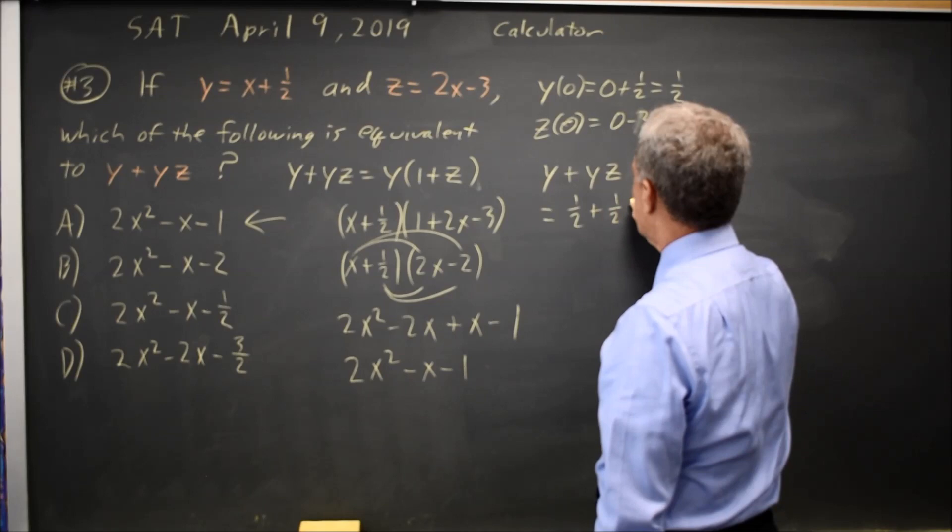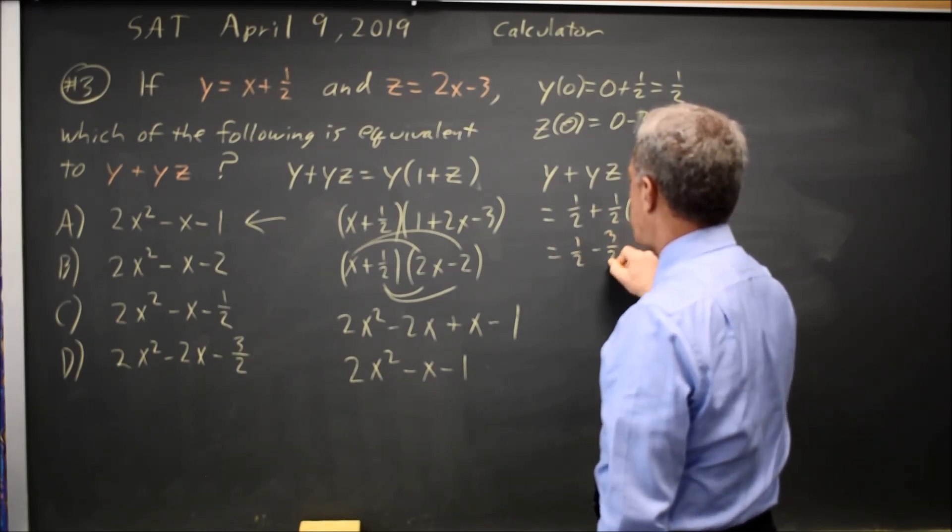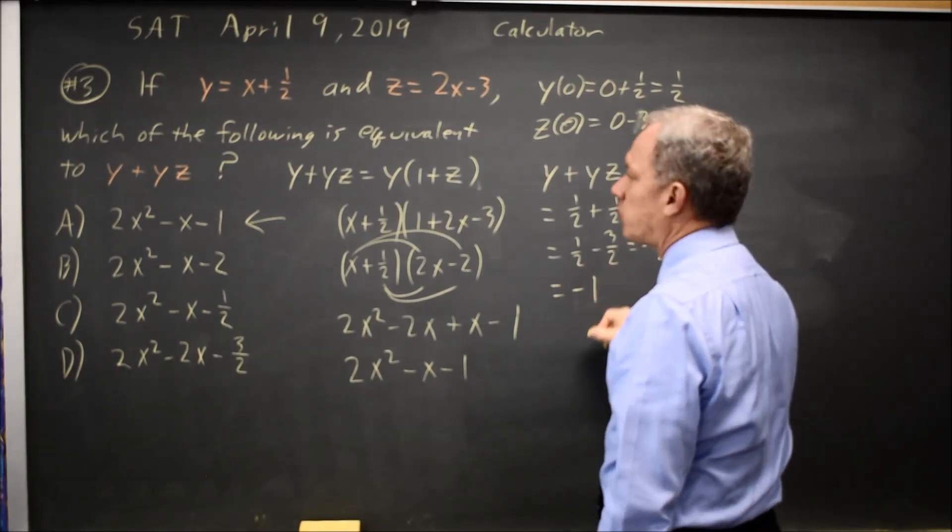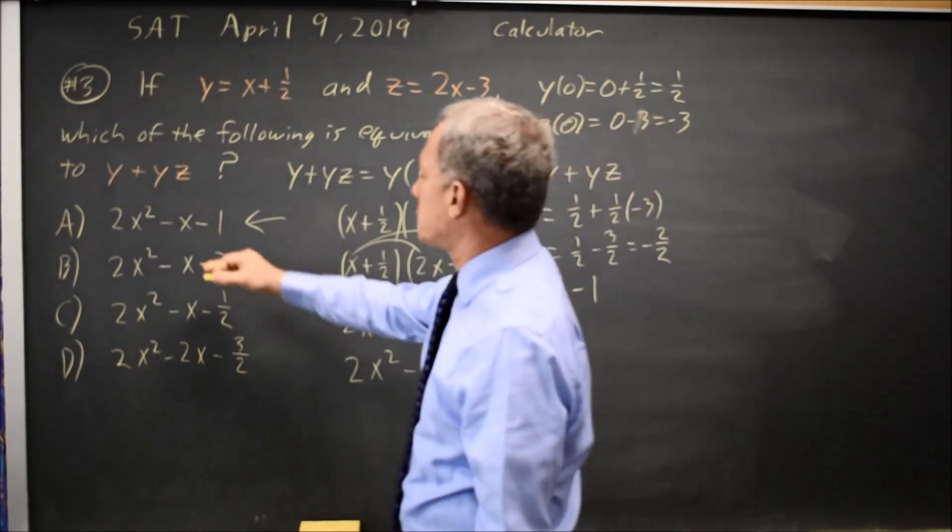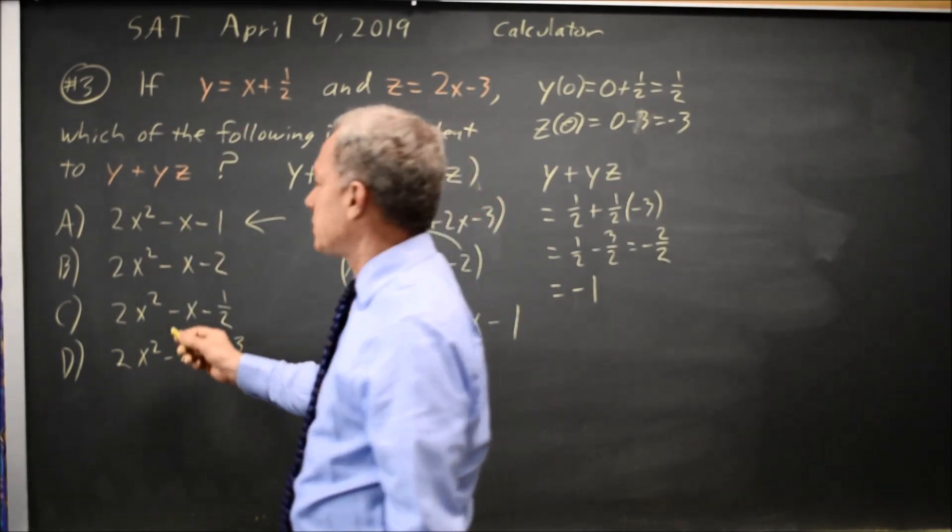So y plus yz equals 1 half plus 1 half of negative 3, which is 1 half minus 3 halves equals negative 1. The only expression that's equal to negative 1 when x is 0 of these choices is choice A.